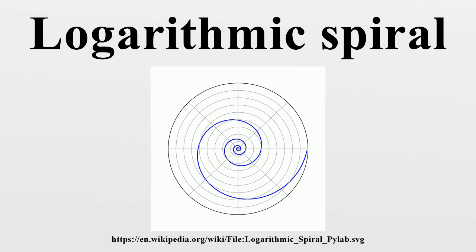Spira mirabilis, Latin for miraculous spiral, is another name for the logarithmic spiral. Although this curve had already been named by other mathematicians, the specific name was given to this curve by Jacob Bernoulli because he was fascinated by one of its unique mathematical properties.